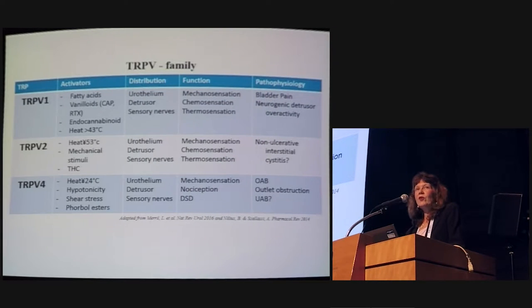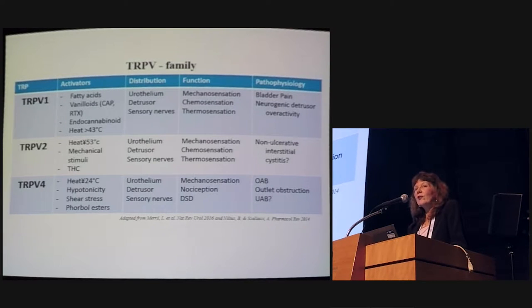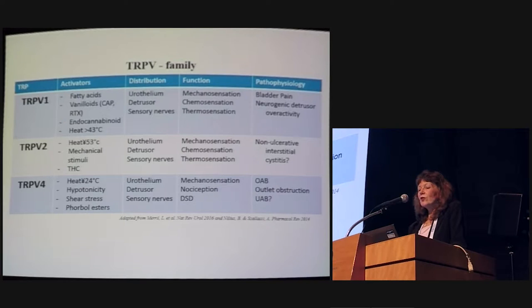Starting with the TRPV family, there are a number of members we know very little about in terms of bladder function. TRPV1 is clearly the best characterized. In terms of activators, anything from fatty acids to vanilloids, capsaicin, RTX, and endocannabinoids.